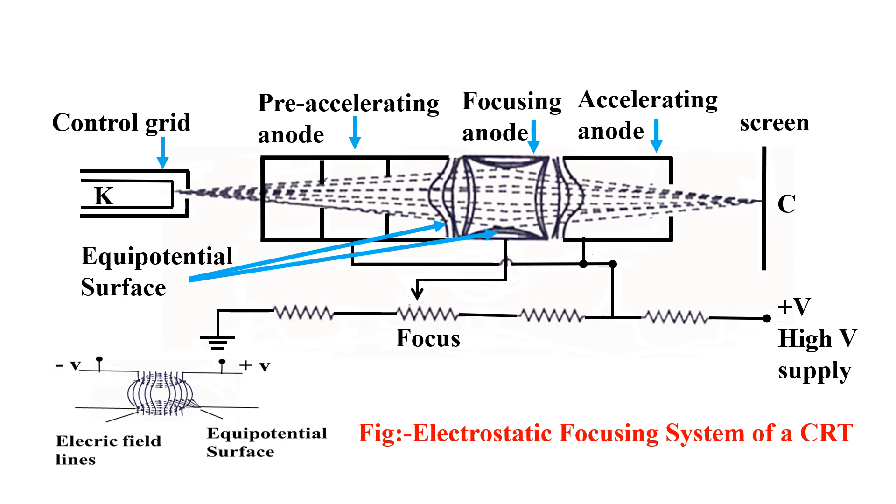A diagram of the electrostatic focusing system of a CRT is shown. The central idea is that the electron beam is focused on the screen by an electrostatic lens consisting of cylindrical anodes.